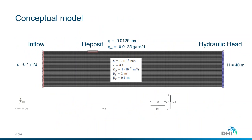Let's bring a simple exercise to understand the difference between these two mathematical formulations. In our conceptual model we have a 2D vertical domain with an inflow of freshwater groundwater flow from the left side, prescribed by a fluid flux BC. On the right side we have a constant hydraulic head BC of 40 meters. There is also a deposit injecting fluid and mass via a fluid flux boundary condition and a mass flux boundary condition. The system consists of homogeneous properties, with values shown on the screen.